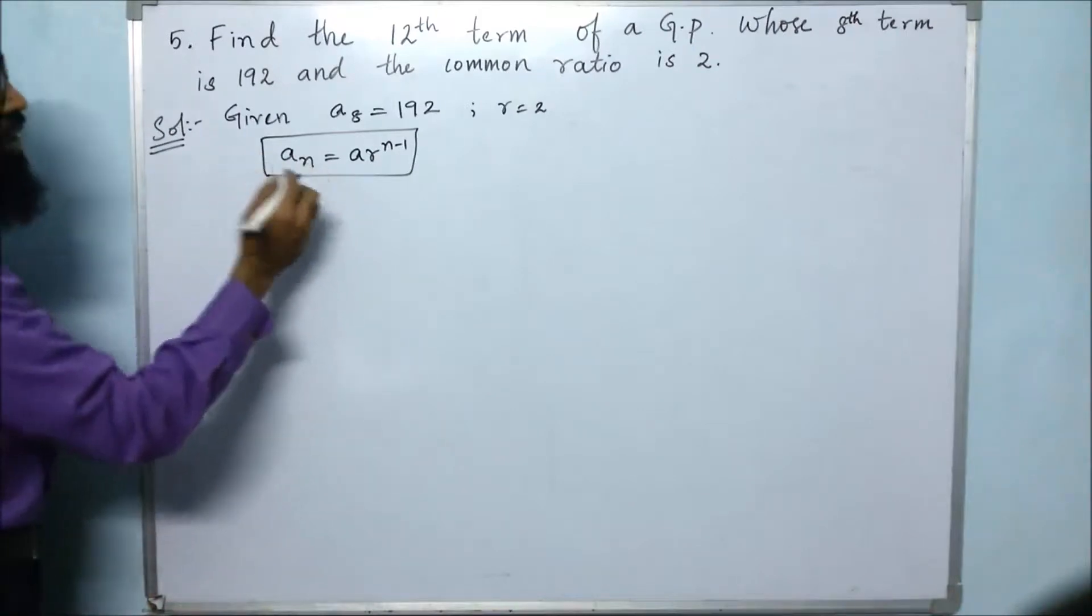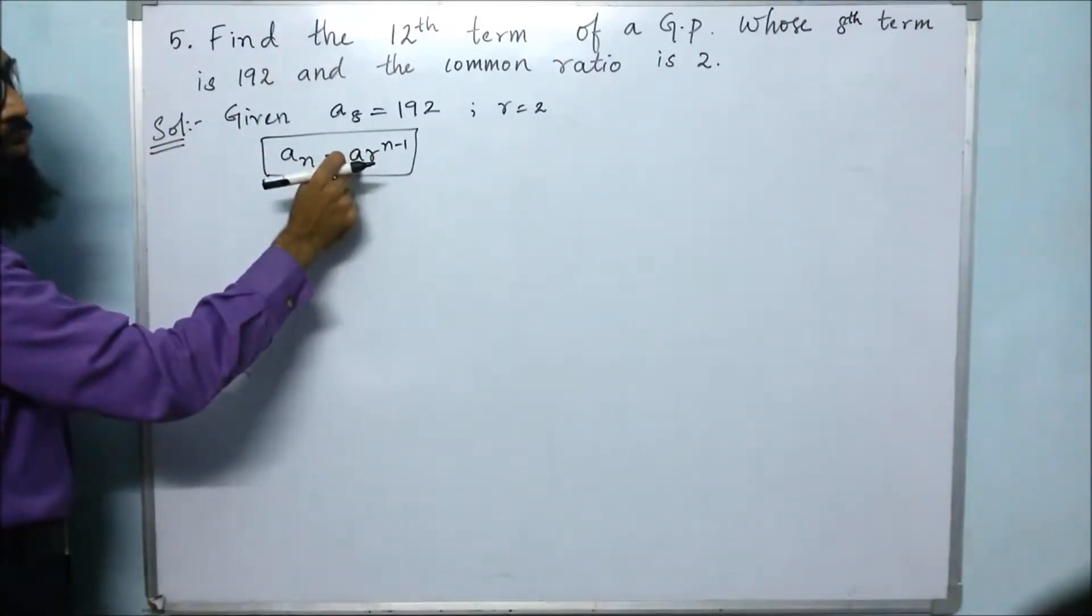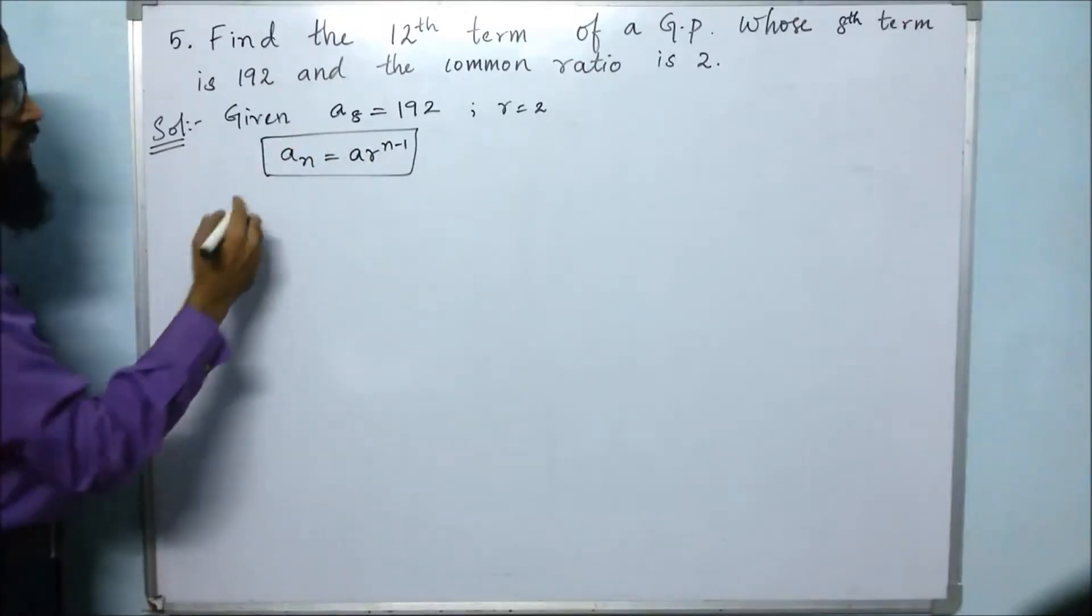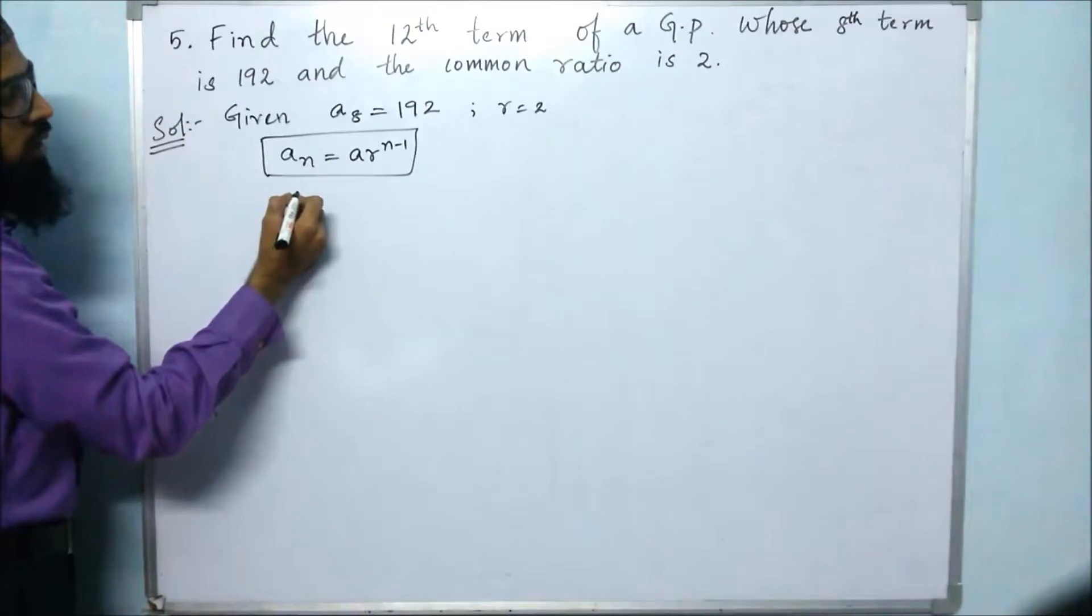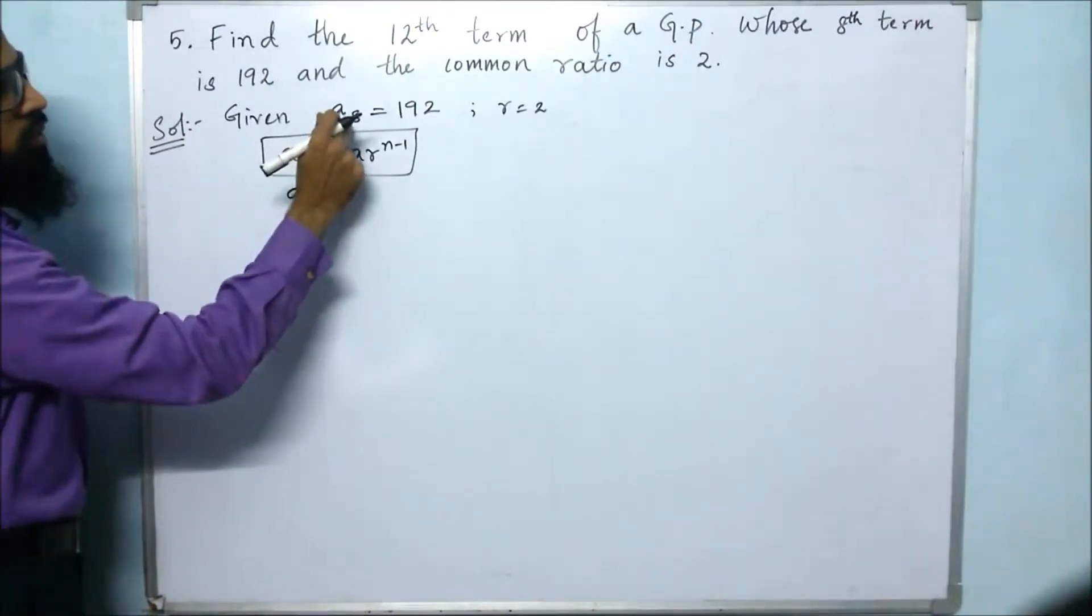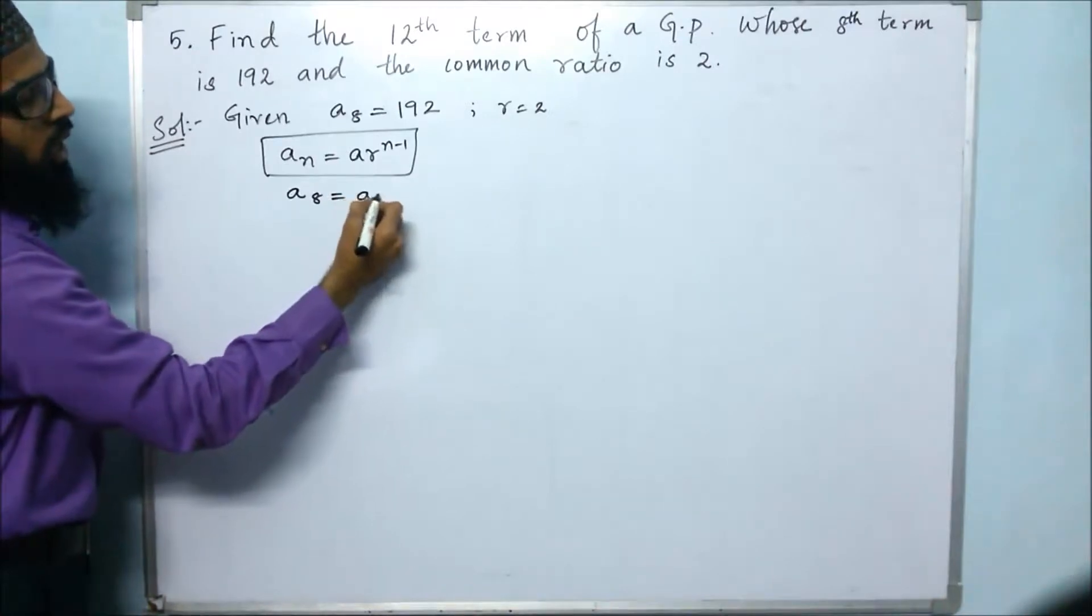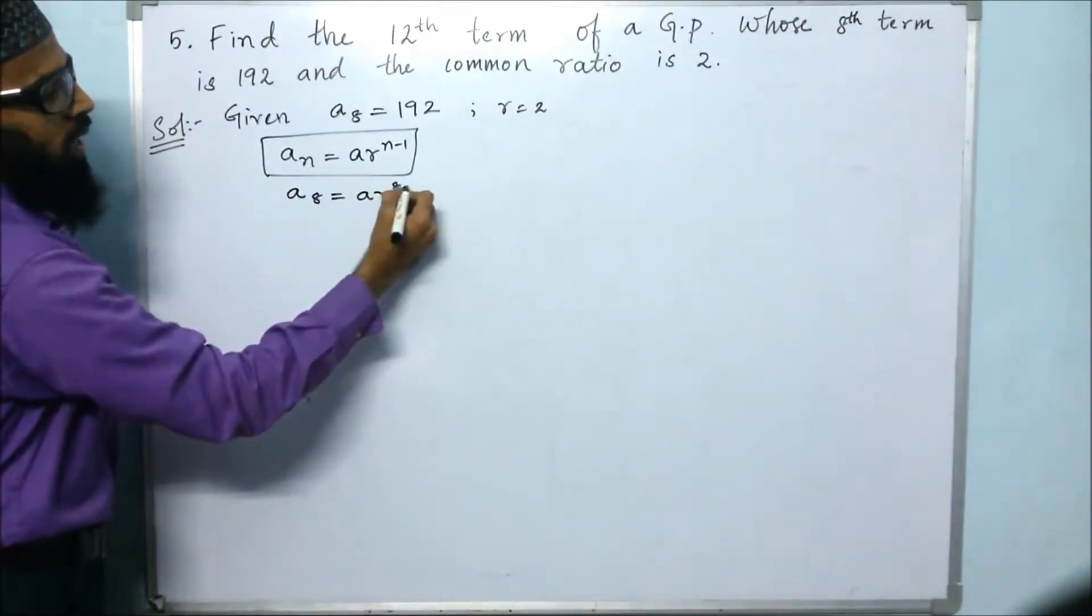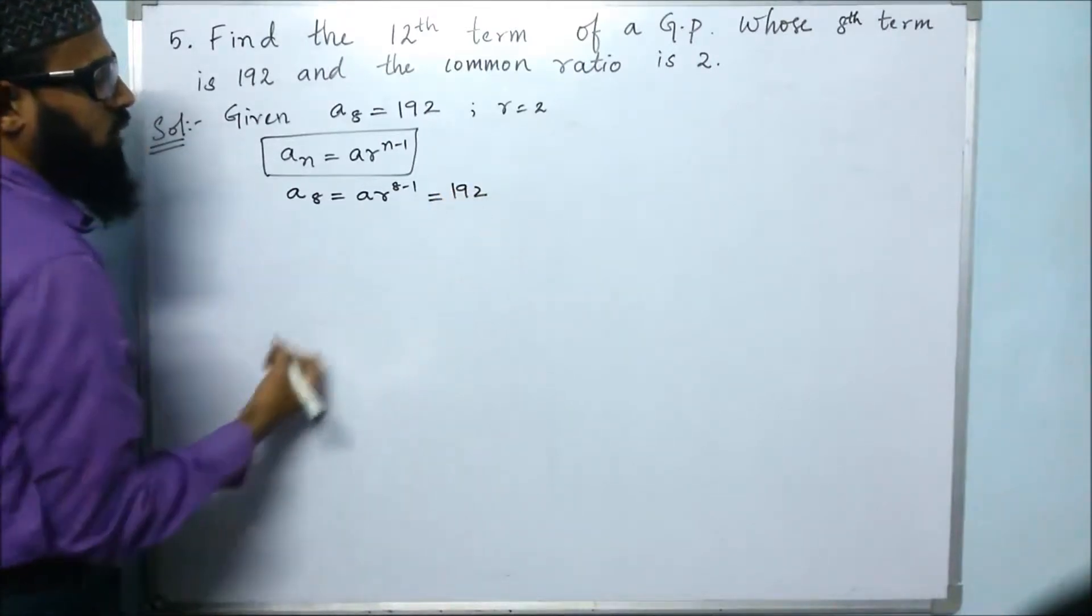Then next, if we substitute the value of a, we don't know the value of a. So we have to find the value of a. We will consider in place of nth term we are having 8. So a8 equals a times r to the power of 8 minus 1. That will be equals to 192.